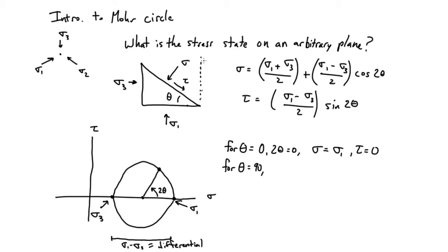Theta equals 90 - well that's a vertical plane here, but on this diagram you put in 90 times 2. So that's two theta equals 180, so that's all the way over here. That is sigma equals sigma 3.